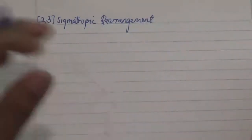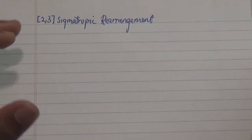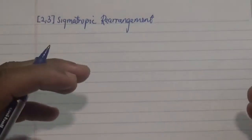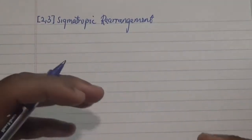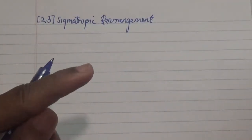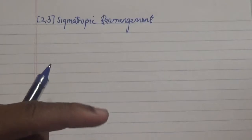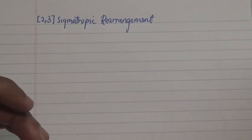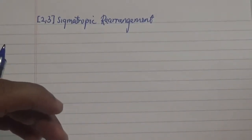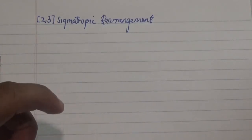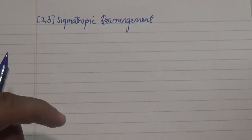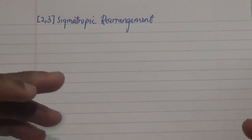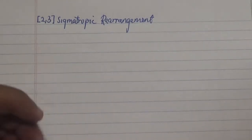Hello everyone again and welcome to my channel. In our previous videos we looked at the 3,3-sigmatropic rearrangement and how on one side we lose one sigma bond and on the other side we gain a sigma bond at the 1,1 position while on the other side is a 3,3 positioning — that is why the name 3,3-sigmatropic process actually came about.